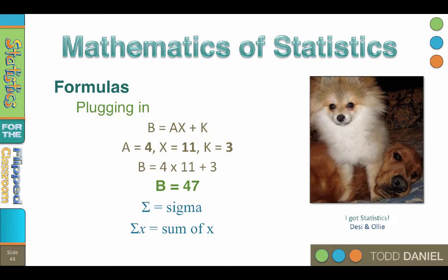If 4, 11, and 3 were x values, then the sum of x would be 4 plus 11 plus 3 or 18.